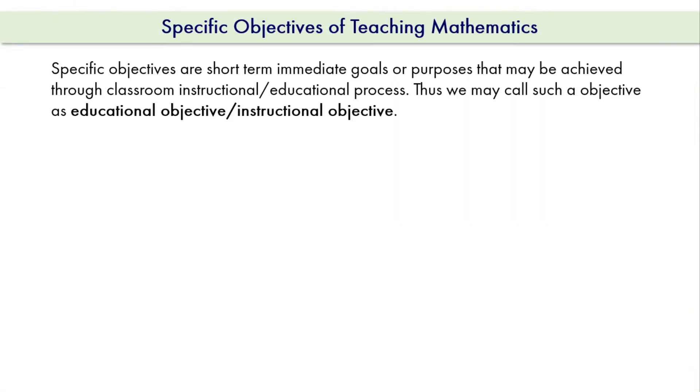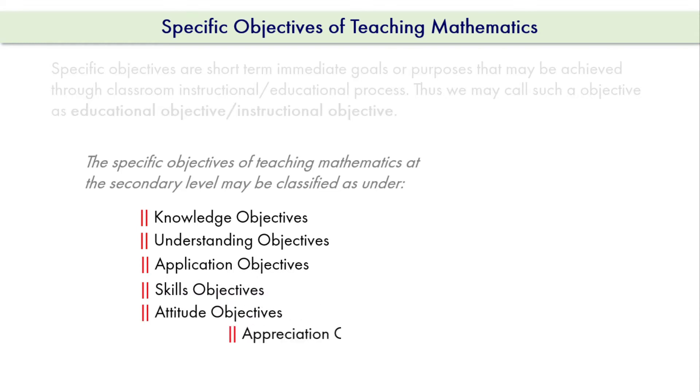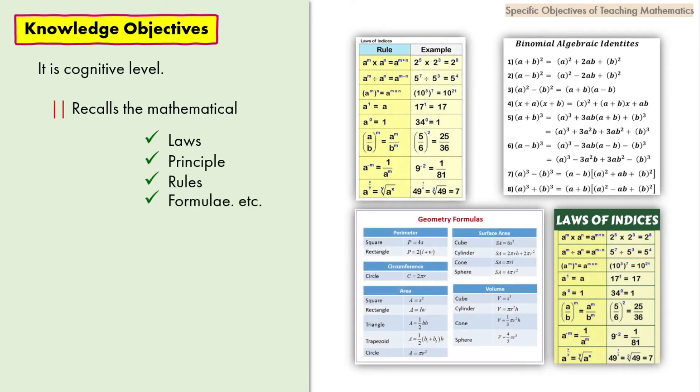Specific objectives is a further breakdown of what changes are expected from learners by the end of a course of instruction which have been designed for the attainment of the general objectives. The specific objectives of teaching mathematics at the secondary level may be classified as under: Knowledge objectives - this is the cognitive level. The student will be able to recall and recognize the mathematical laws, principles, rules, and formulas.